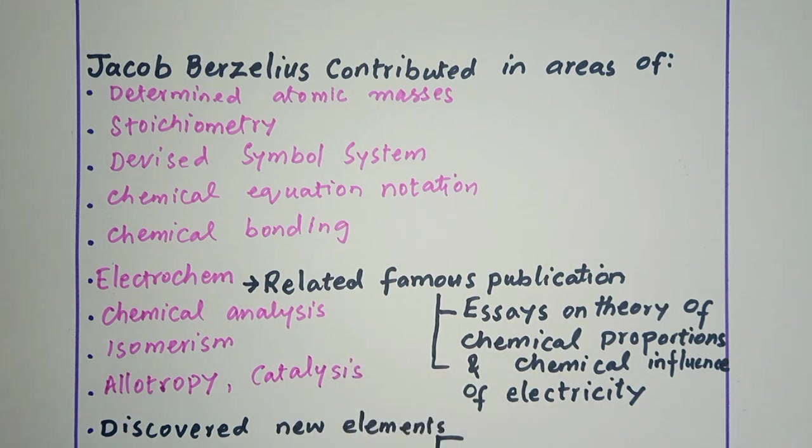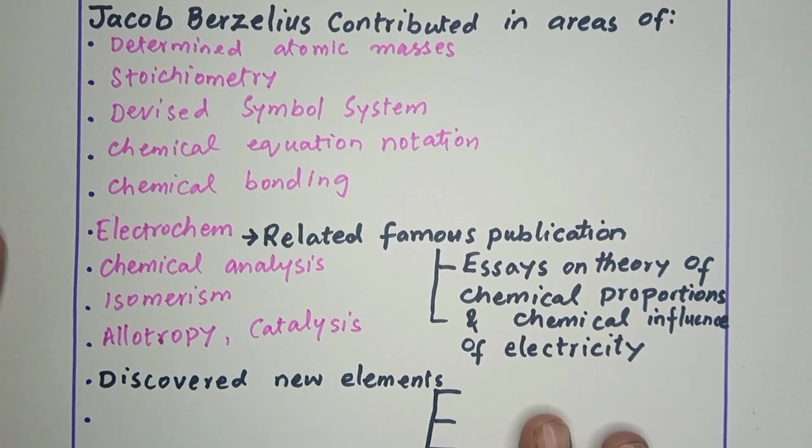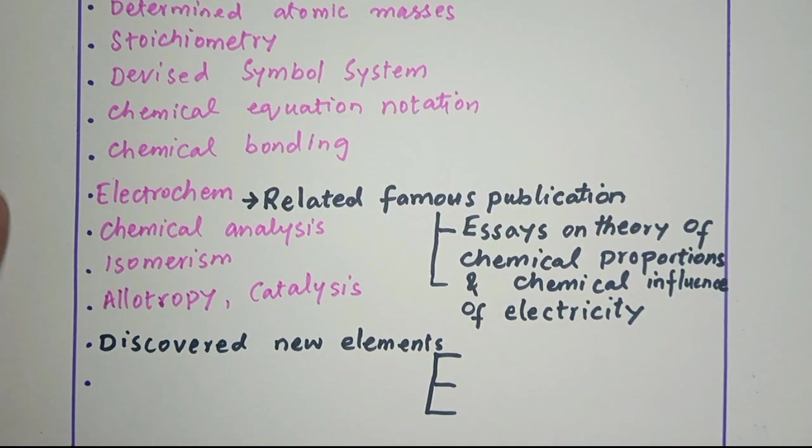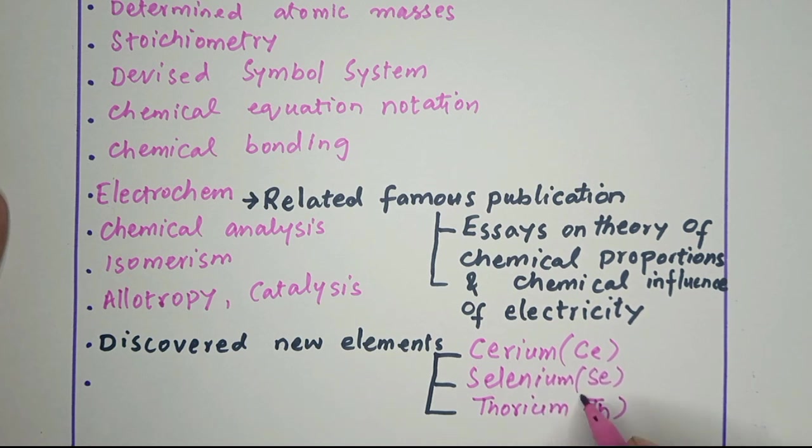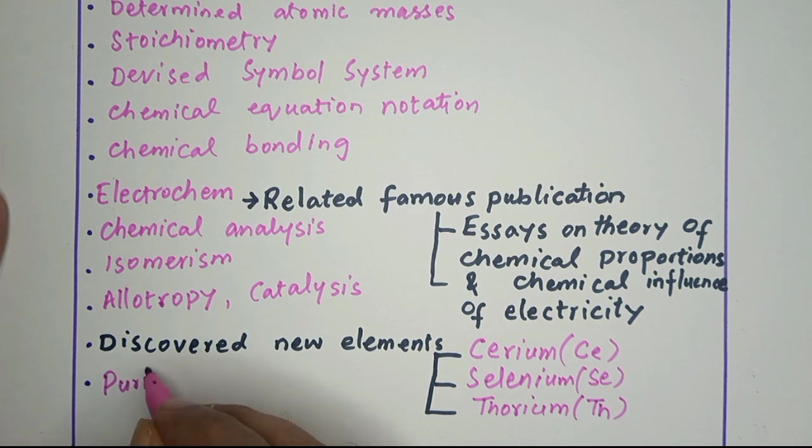Jacob Berzelius has discovered three elements, some people say four elements: cerium, selenium, thorium, and silicon. Some people say that silicon was discovered as well. He isolated the pure form of silicon.